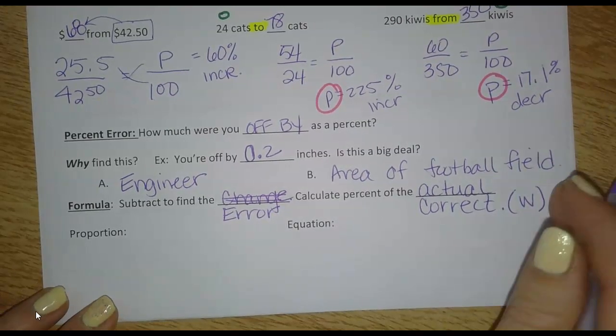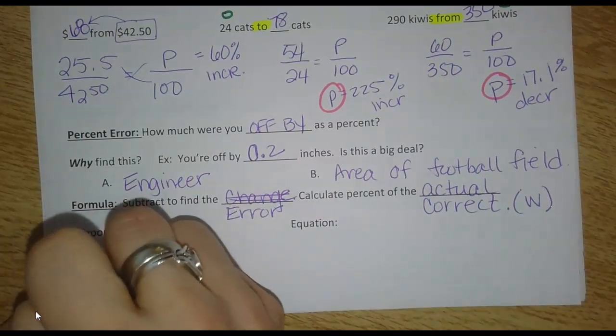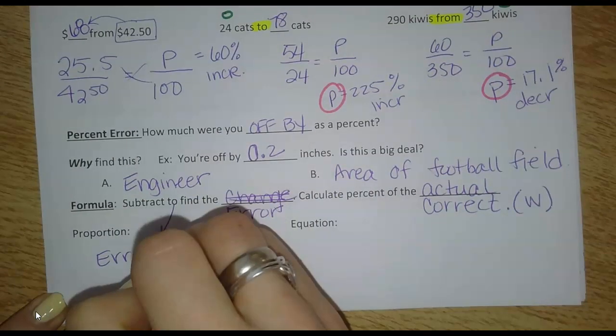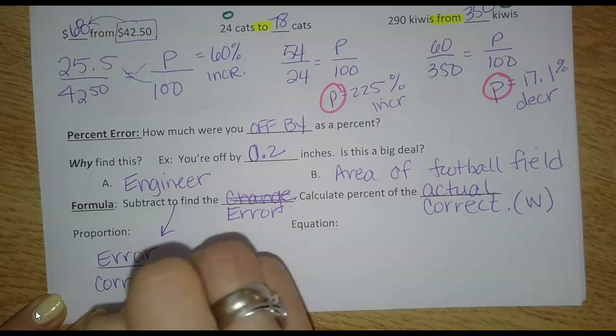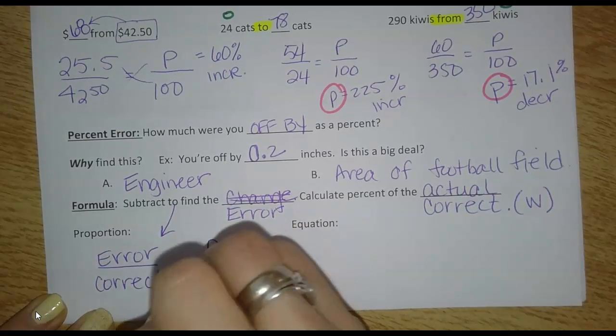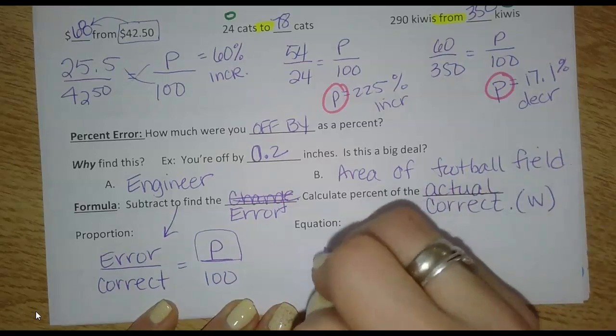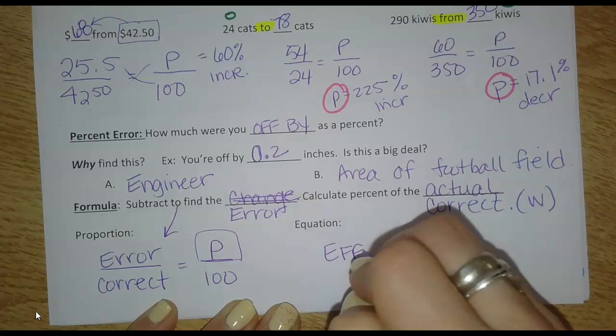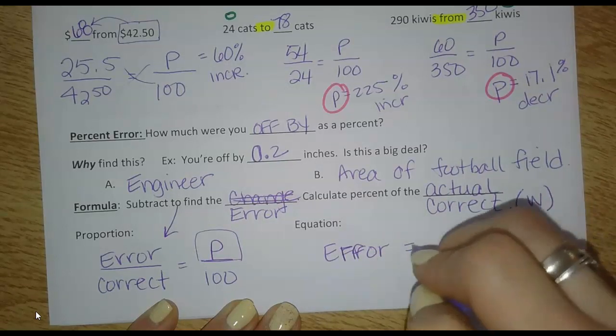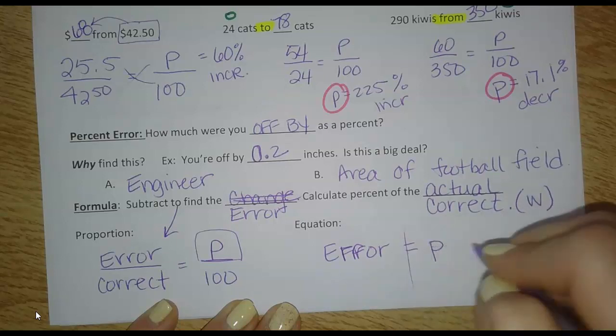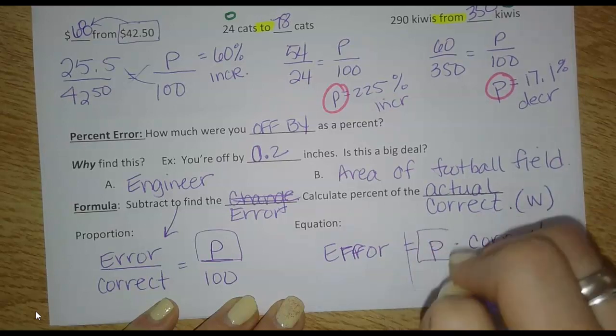So it looks similar to percent change. This is going to be your error. And remember, we're going to subtract to find that number compared to the correct number and then figure out what percent over 100. So again, we're still looking for P and the equation is very similar. The error equals the percent that you're trying to find times the correct number.